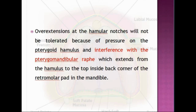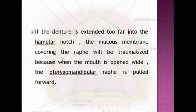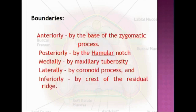If the denture is extended too far into the hamular notch, the mucous membrane covering the raphe will be traumatized, because when the mouth is opened wide the pterygo-mandibular raphe is pulled forward. The boundaries of the hamular notch are: anteriorly by the base of the zygomatic process, posteriorly by the hamular notch itself, medially by the maxillary tuberosity, laterally by the coronoid process, and inferiorly by the crest of the residual ridge.